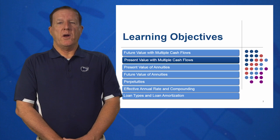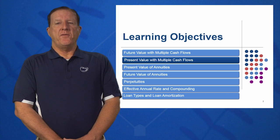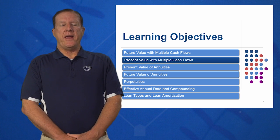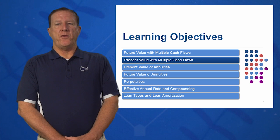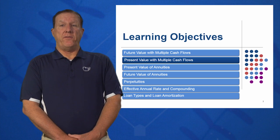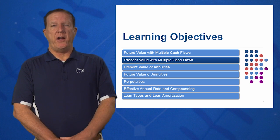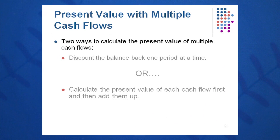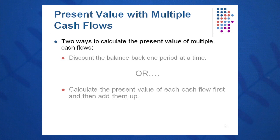In Learning Objective 2, we're going to talk about present values with multiple cash flows. How do we handle these if we have different cash flows, and how do we handle these if they're the same amount each and every year? There are two ways to do it: discount the balance back one period at a time, or calculate the present value of each cash flow and then add them up. You should be able to do them either way.